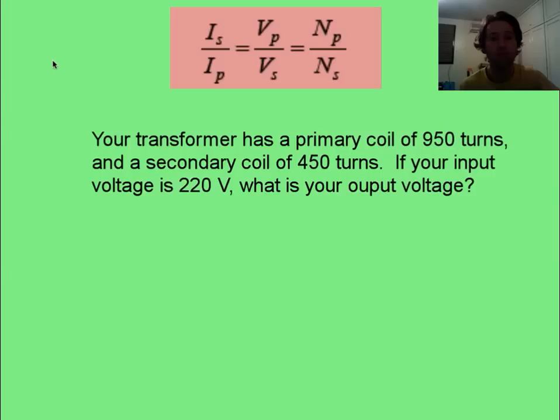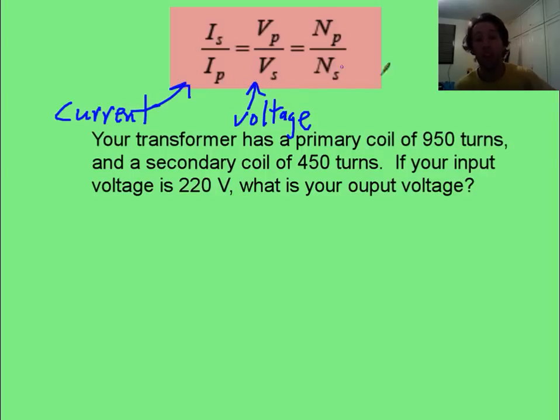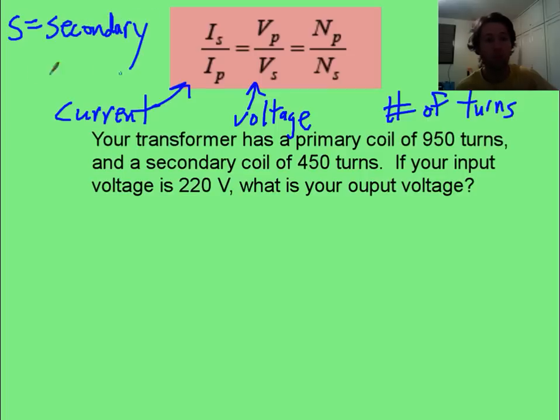The equation to deal with ideal transformers is super easy. If you look at this here, the I is current, your V is voltage, and this N is number of turns of coil. Whenever you see an S, that's standing for your secondary coil. Whenever you see a P, that's standing for your primary or your input.